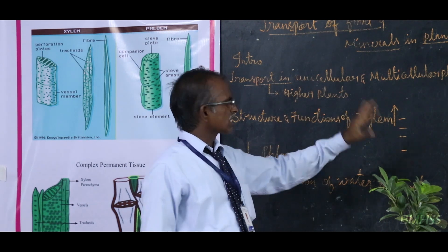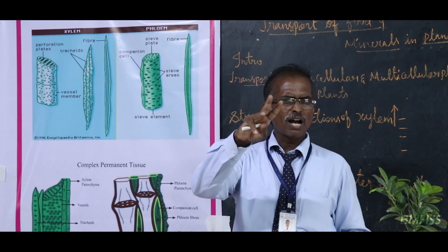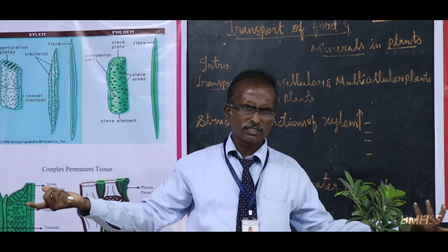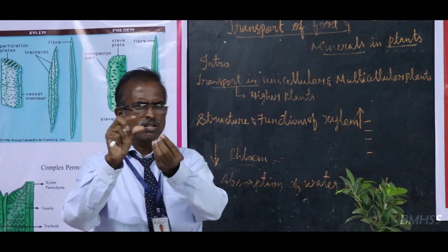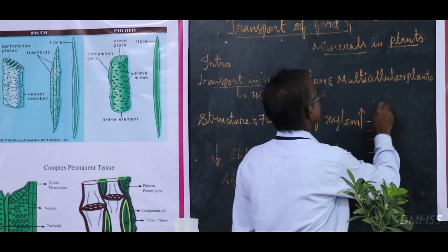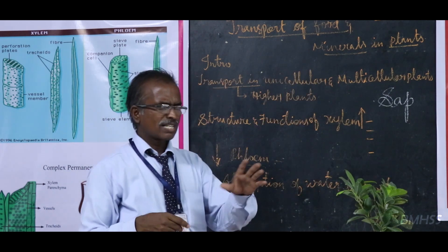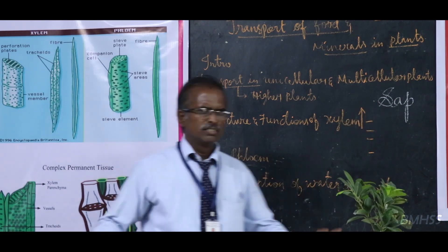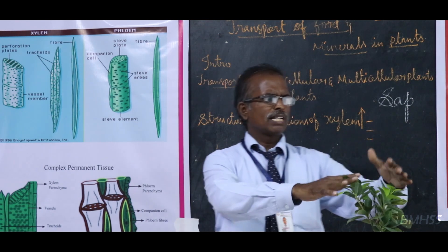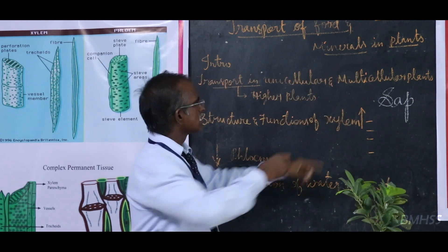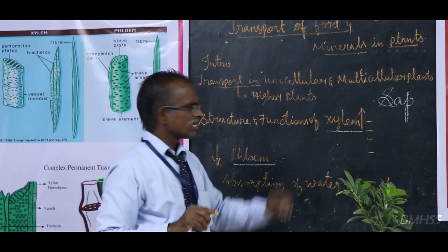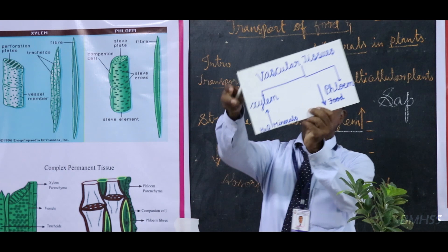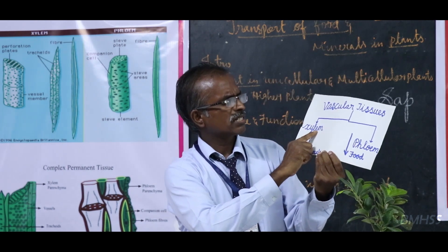In higher plants, transportation occurs in a very complicated and elaborate way. Plants do not have a heart or blood vessels. Plants have a blood-like fluid called sap. This sap is transported to other parts of the plant body. In higher plants, specialized tubes developed for transportation. These tubes are called xylem and phloem. Xylem and phloem combine together - this tissue is called vascular tissue. Vascular tissue is the combination of xylem and phloem.